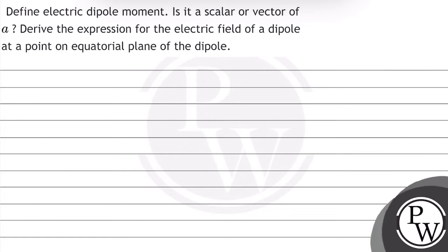Hello, let's read this question. The question says: define electric dipole moment. Is it a scalar or a vector? And derive the expression for the electric field of a dipole at a point on the equatorial plane of the dipole.